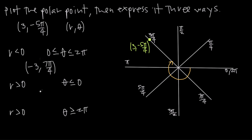Now let's find another way to express it: we need a positive value for r and a negative value for theta. A positive r means we go out along this angle in the second quadrant. A negative theta means we start at the positive x-axis and move clockwise. We could go to negative 5 pi over 4 with r = 3, but that's just the original point, so we can't use that.